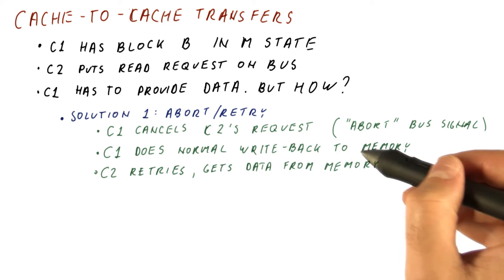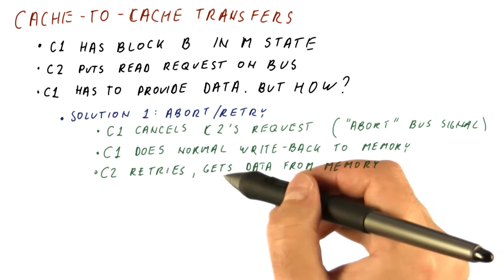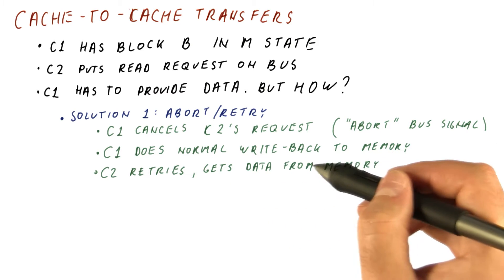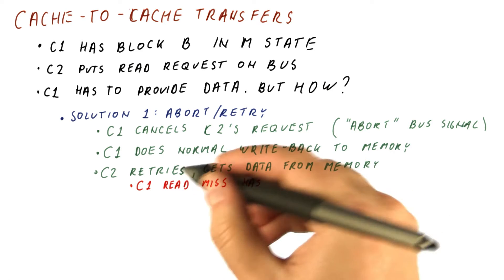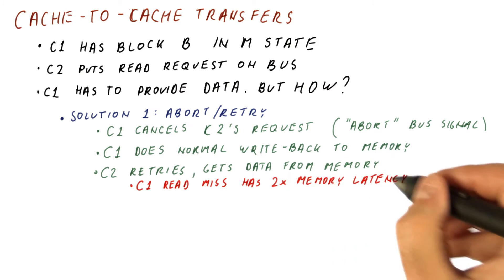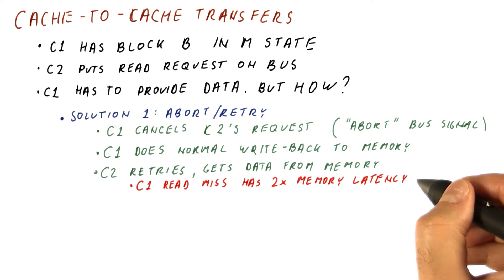One for the write-back to memory to happen on C1, and then for us to actually get the data from memory. So the read miss from C1 has a latency that is twice the memory latency plus some. So this is why this approach is not ideal.